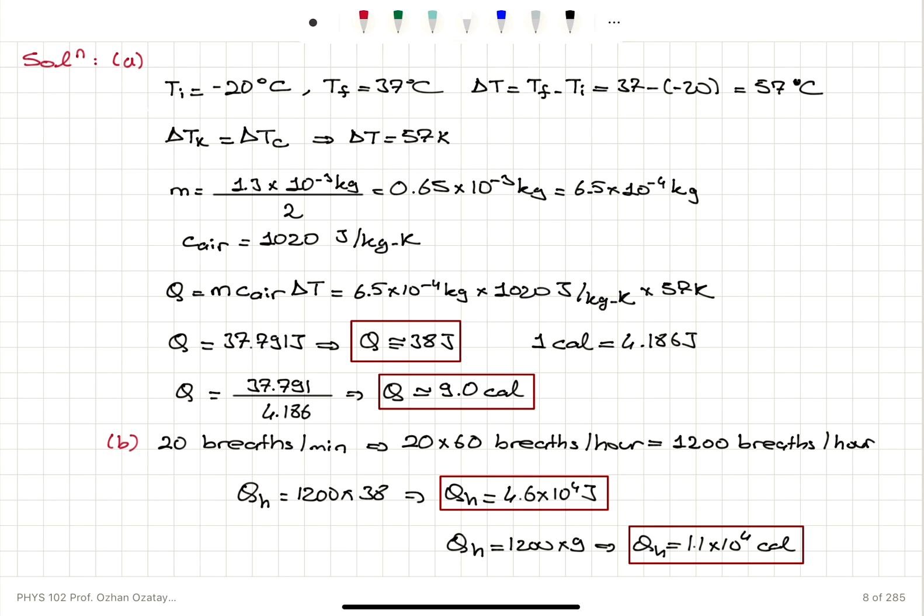For part B, we need to know how many breaths we have in one hour. With 20 breaths per minute respiration rate, we have 1200 breaths per hour. So 1200 times 38, that's 4.6 times 10 to 4 joules, is the total amount of heat lost in one hour.